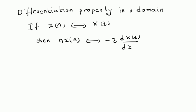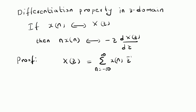Let us look at the proof of this property. The proof can be given as follows. Starting with the definition of Z transform, X of Z is given by the summation from n equals minus infinity to plus infinity of X of n times Z power minus n.